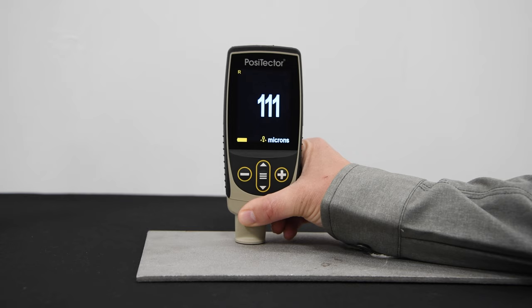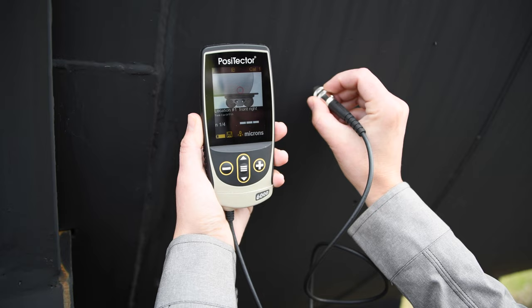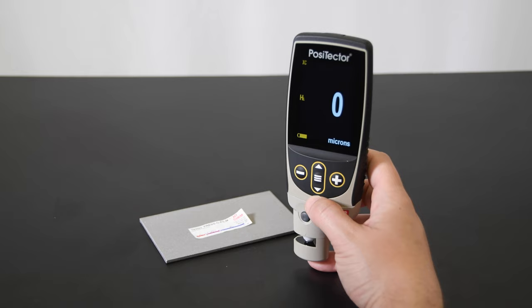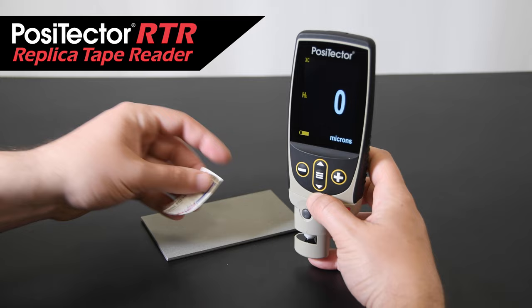PosiTector SPG probes connect to the interchangeable PosiTector platform, quickly transforming from a surface profile gauge to a coating thickness gauge, dew point meter, gloss meter, and more.